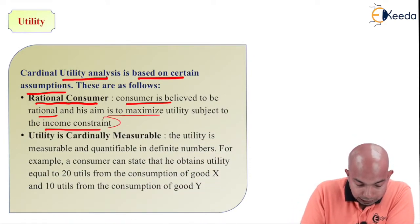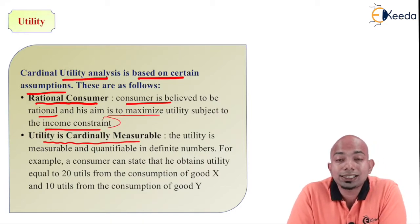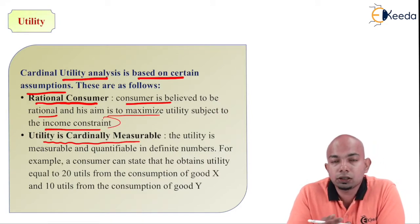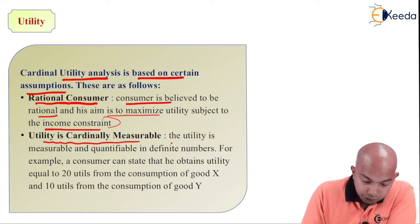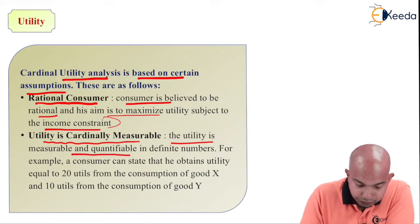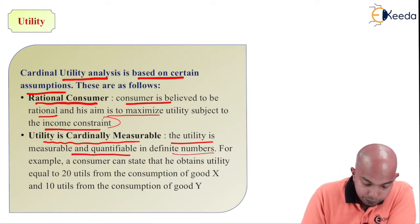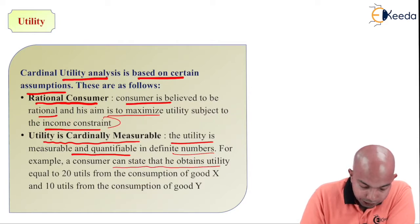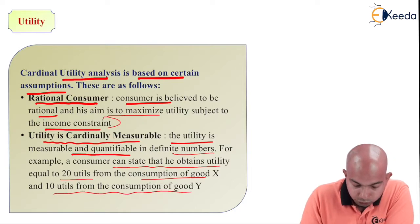The second assumption is that utility is cardinally measurable. Satisfaction is measured in terms of numbers — it can be measured and quantified in definite numbers. For example, a consumer can say that he obtains utility equal to 20 utils from the consumption of good X and 10 utils from the consumption of good Y.